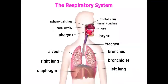First of all, let's talk about the organs of the respiratory system. The first organ is our nose, where air basically enters into our respiratory system. And the nose is where air comes from. Next is the larynx, which is a voice box, also called Adam's apple. Here sound is produced.